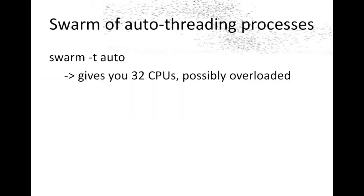You might have auto-threading processes, where each process tests the node to see how many CPUs are available and spawns off as many threads as there are CPUs. In that case, you use the -t auto flag, which is guaranteed to give you a node with at least 32 CPUs for each process — that is, each line in your swarm command file.